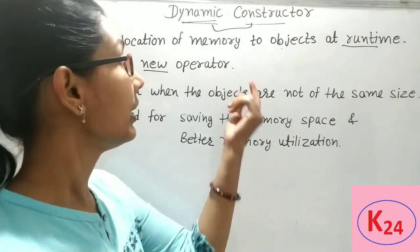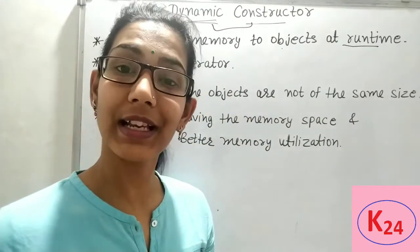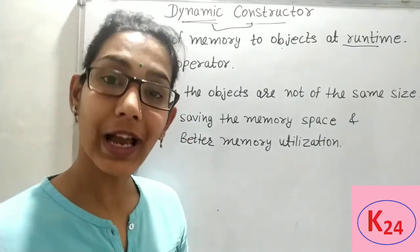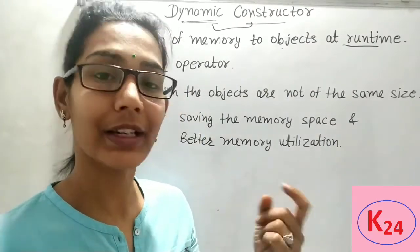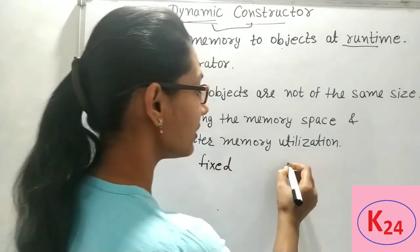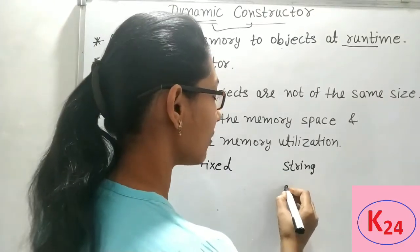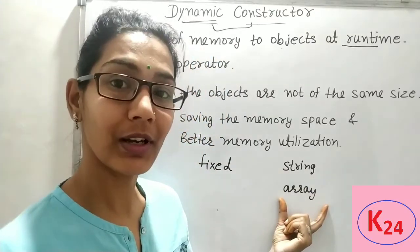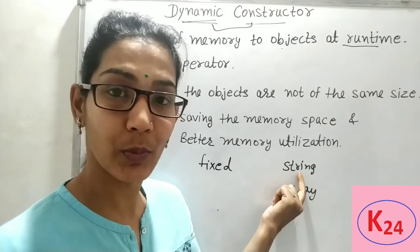To make the dynamic constructor we use the new operator for memory allocation in the constructor. Dynamic constructor is basically used for allocating memory at runtime. For example, we have an integer type which takes two bytes, so its size is fixed. But suppose we have a string — a string is a group of characters — and these types of data will not take any specific fixed size.